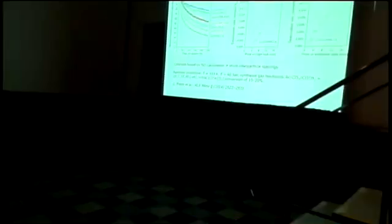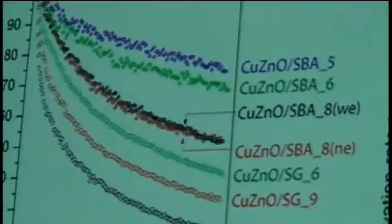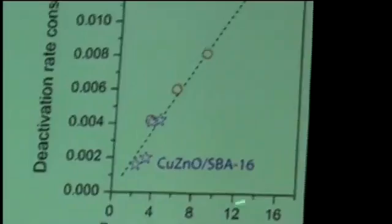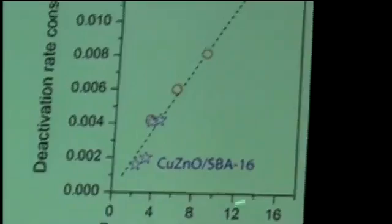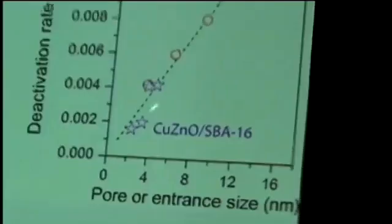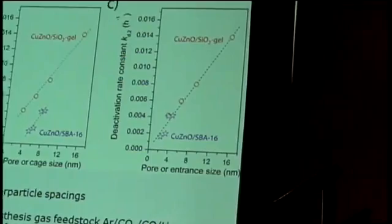We extended that work, published last year, moving from silica gel also to SBA-16-type systems with cage-like structures rather than one-dimensional pores. Jumping to the conclusion: the deactivation rate constant is proportional to the pore entrance size of the cages in the case of NO-calcined samples where particles are close together. We get a very nice relationship between deactivation rate and pore size. The fact remains that if distances are large, there is still communication between particles via Ostwald ripening, so what can we do to suppress that route for particle growth?